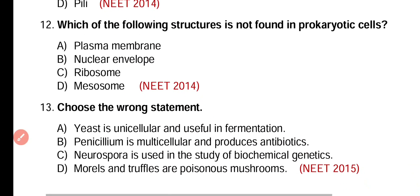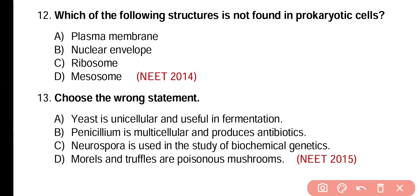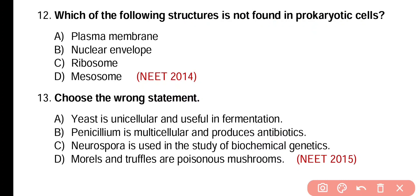Question number 12. Which of the following structures is not found in a prokaryotic cell? Plasma membrane, nuclear envelope, ribosomes, or mesosome. Correct answer is option B. As there is no distinct nucleus in a prokaryotic cell, they have no nuclear envelope.